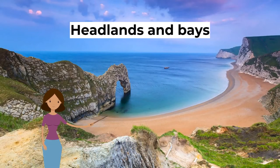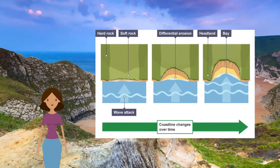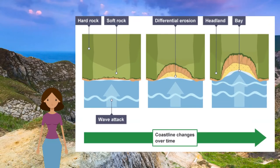Now let's look at headlands and bays. Headlands are formed when the sea attacks a section of coast with alternating bands of hard and soft rock. The bands of soft rock, such as sand and clay, erode more quickly than those of more resistant rock, such as chalk. This leaves a section of land jutting out into the sea called a headland. The areas where the soft rock has eroded away, next to the headland, are called bays.